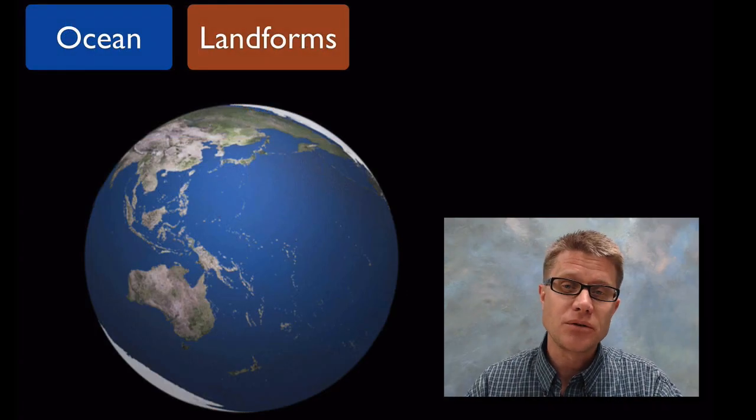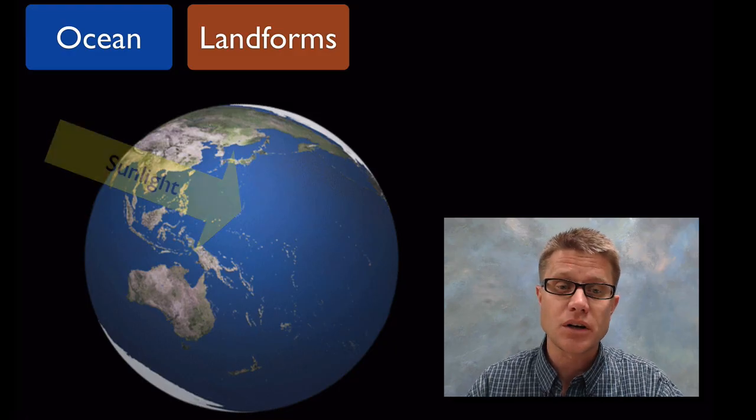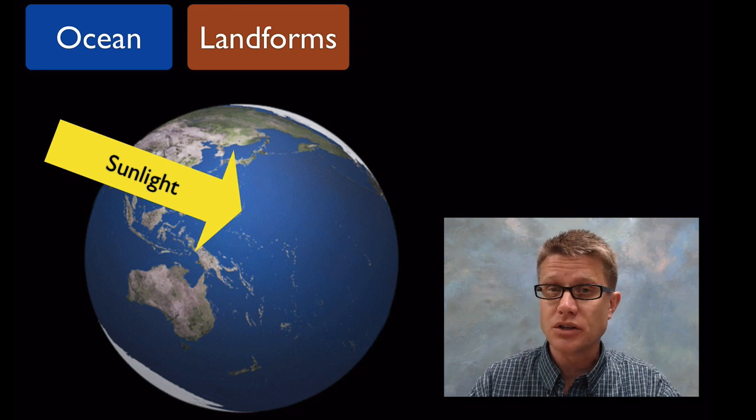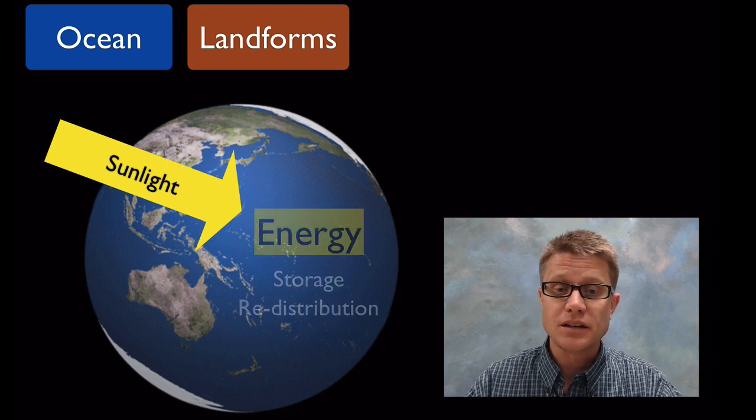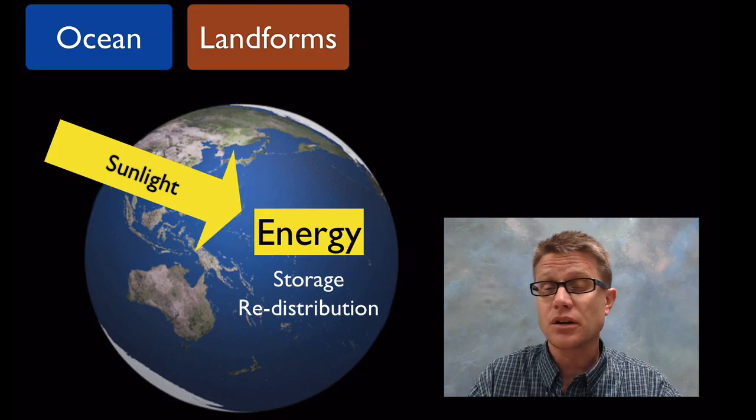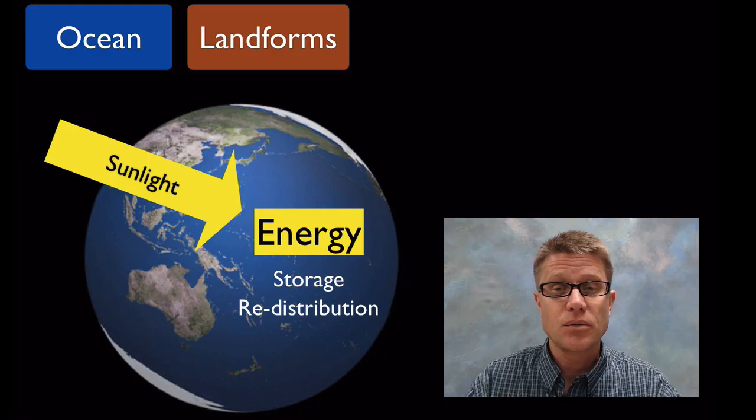When you look at our planet, you see oceans and landforms. Those oceans and landforms receive energy in the form of sunlight. What they do with that energy determines the weather. They take in that energy, release some of it, absorb some of it, and redistribute it on our planet, creating the weather we have.